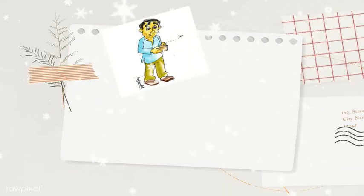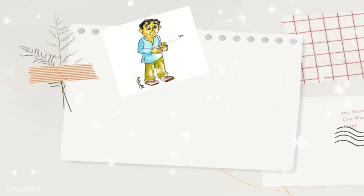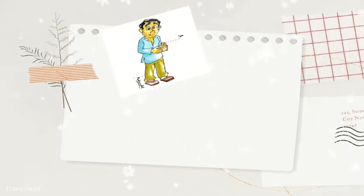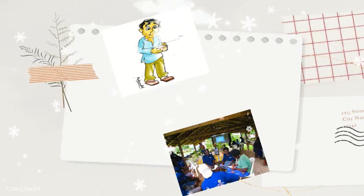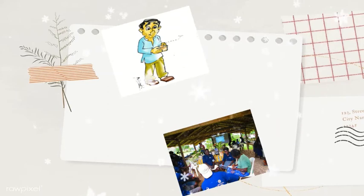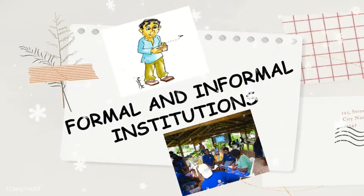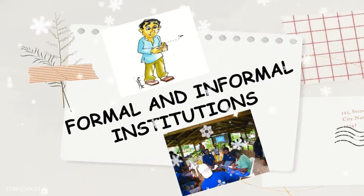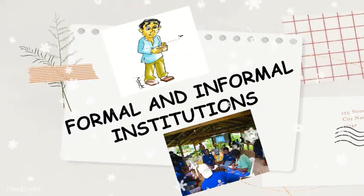Looking at the image shown — it's a poor man, maybe holding his wallet or something, possibly representing someone without work or money. Another image shows people having a meeting or interview, perhaps for statistical purposes. This brings us to formal and informal institutions. Since we've discussed what an institution is, let's now proceed to formal and informal institutions.